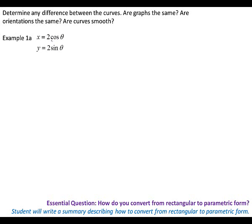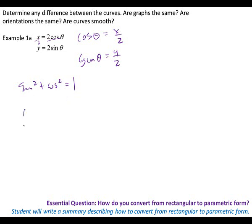I'm going to use the same thing we did on that last homework problem. Since it's in trig and I know what sine squared plus cosine squared equals, I'm going to use that technique. I'm going to divide both sides by two, so cosine θ equals x over 2, and sine θ equals y over 2. Then I know that sine squared plus cosine squared equals one, so that's going to allow me to substitute these in: x over 2 squared plus y over 2 squared equals one.